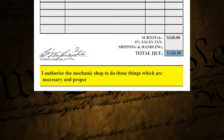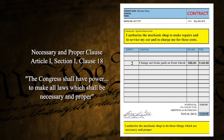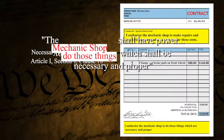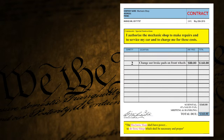That part at the bottom of the contract is similar to the necessary and proper clause. Let's read through that together: I authorize the mechanic shop to do those things which are necessary and proper. It's similar to the necessary and proper clause that says, the Congress shall have power to make all laws that shall be necessary and proper. Remember, Congress is represented by the mechanic shop — the federal government. Just like Congress shall have power to make laws that shall be necessary and proper. You see how the necessary and proper clause is similar to that phrase in the contract, how it works together?